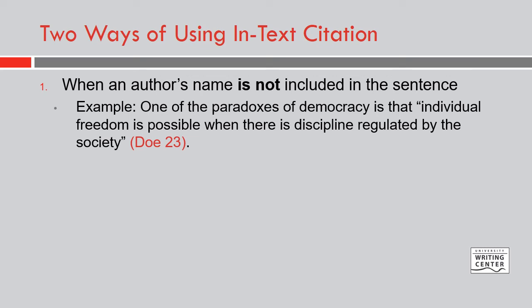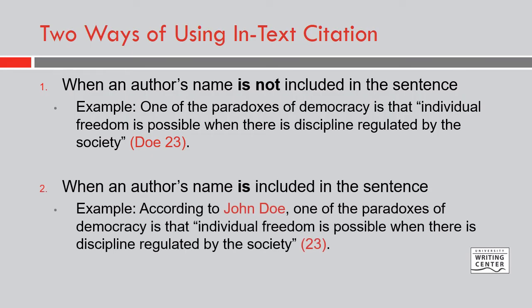In general, there are two ways you can craft sentences using in-text citations. First, you may choose not to use the author's name in the sentence. This is common in MLA, and if you choose not to use the author's name, your in-text citation must include the last name of the author and a page number if you have one available. Second, you may choose to include the author's name in the sentence by using what is called a signal phrase, like 'according to John Doe' or 'as Jane Doe writes.' A signal phrase indicates that you are pulling this information from a source, and your in-text citation will then only include a page number.